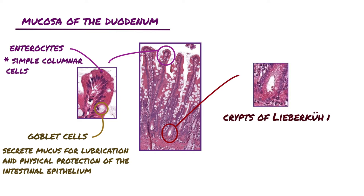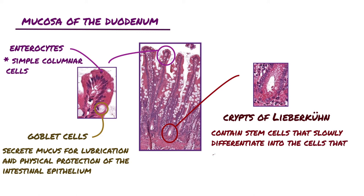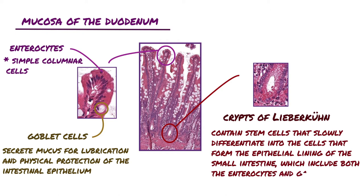The crypts of Lieberkühn, or intestinal crypts, are glands found at the bases of the villi. The crypts contain stem cells that slowly differentiate into the cells that form the epithelial lining of the small intestine, which include both the enterocytes and goblet cells. The differentiated cells move up the villi as new cells are continually formed underneath them, and within a week the cells will reach the tip of the villi, where they are shed into the lumen.